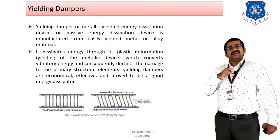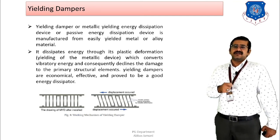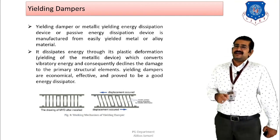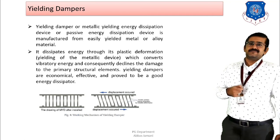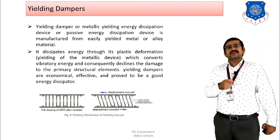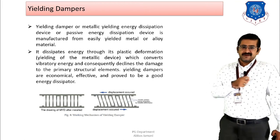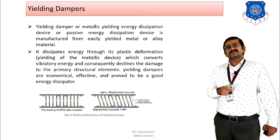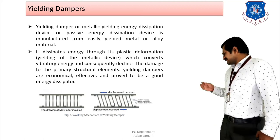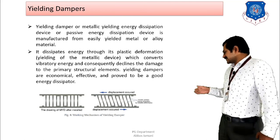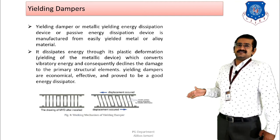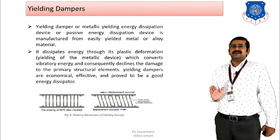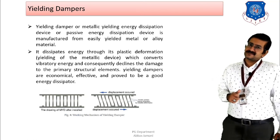Building collapse typically initiates from damage to primary members. If damage to primary members is controlled using yielding dampers, structural collapse can also be controlled. Installation of yielding dampers helps control damage to primary members, enhancing structural performance and enabling good energy dissipation. In the second figure, the yielding of top and bottom members is visible, demonstrating that energy dissipation has taken place through metal yielding.